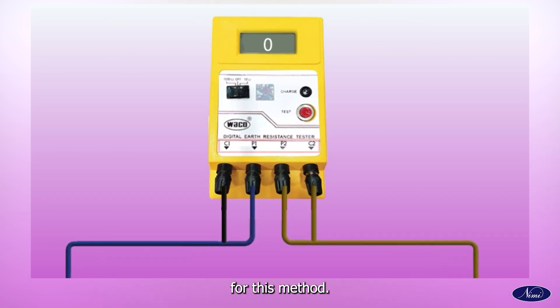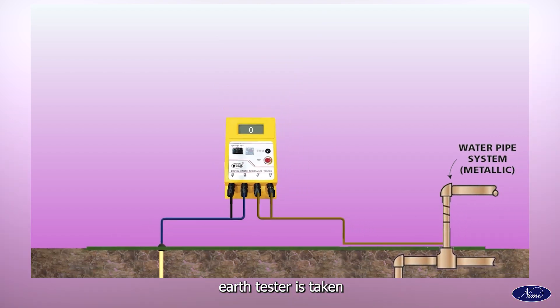This method is applicable in areas where the ground rod or electrode drive may not be possible. For this method, the same four terminals C1, C2, P1, P2 earth tester is taken.